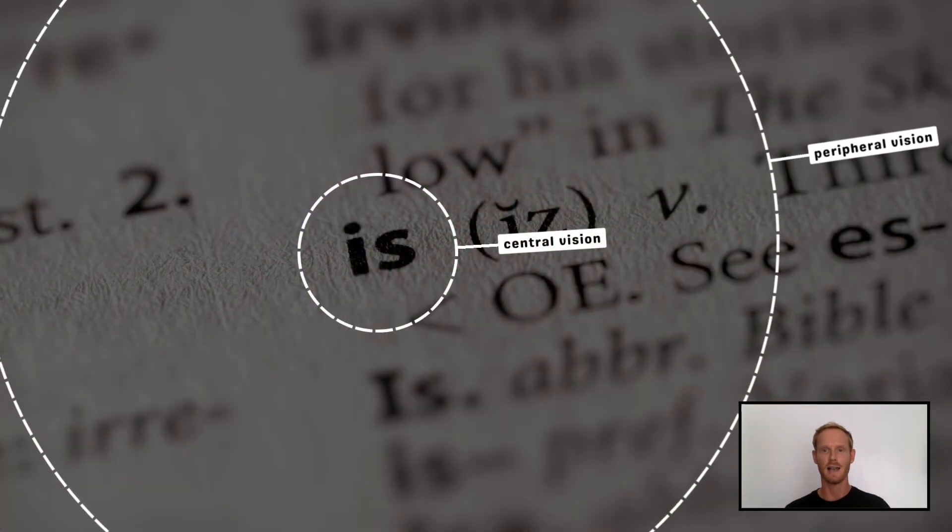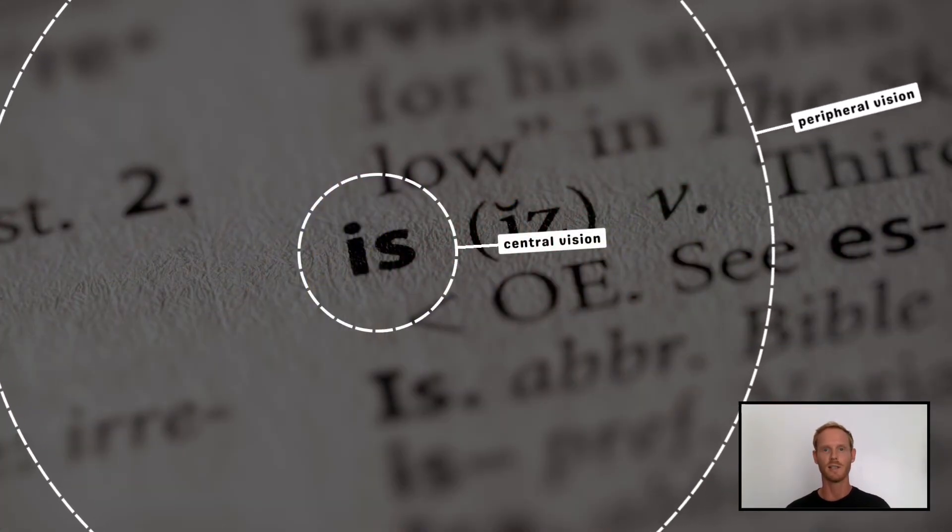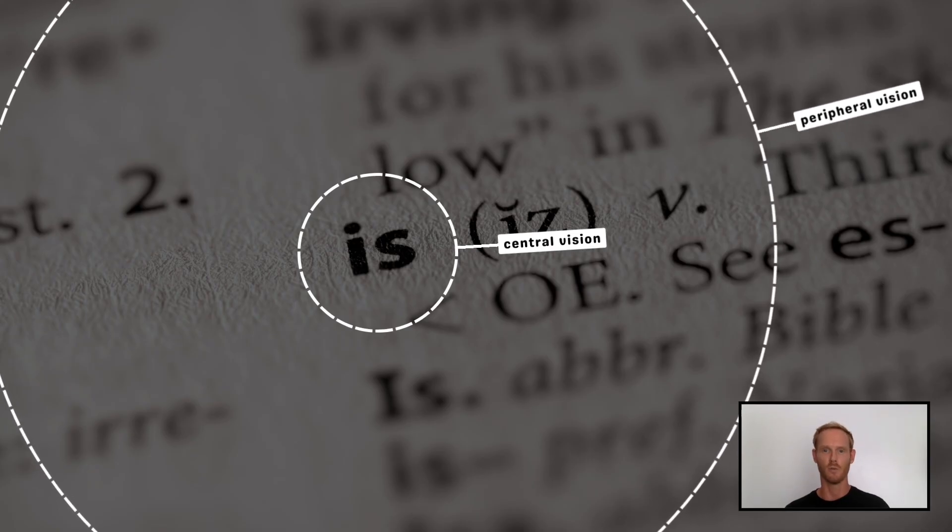By comparison, light that lands on the rest of the retina produces an image that's much less defined. This is called peripheral vision.